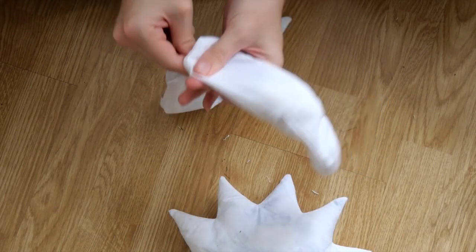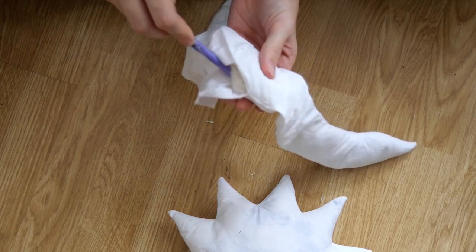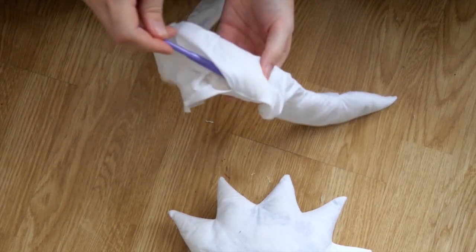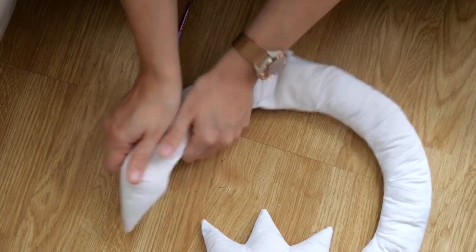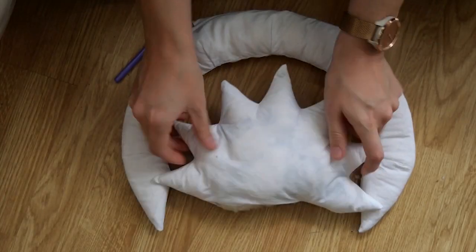The same I did for the outer ring. Again I used the crochet hook to really push it to the edges. Then I was just feeling if it's right and hoped that it would be enough material.